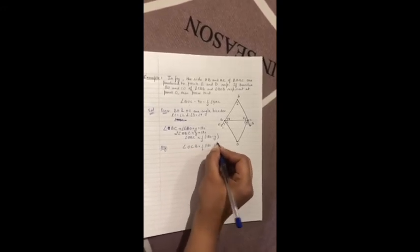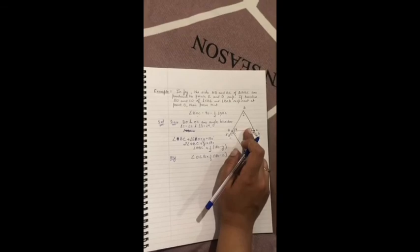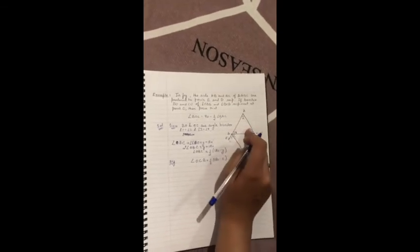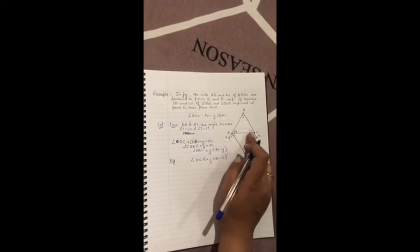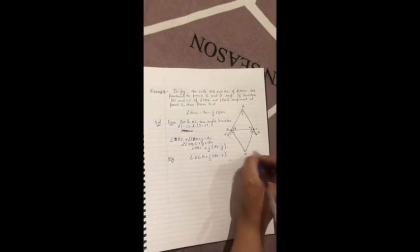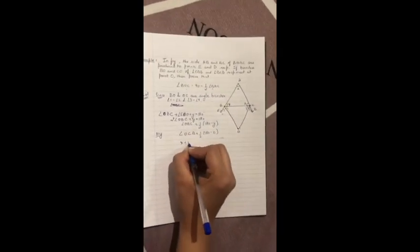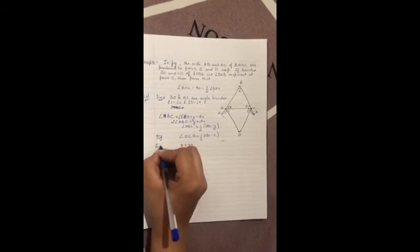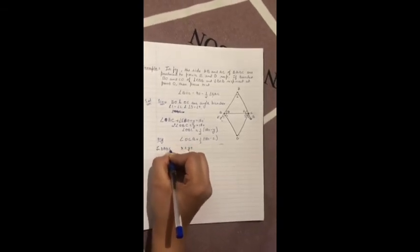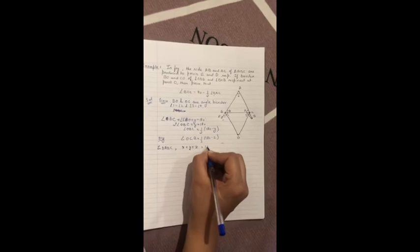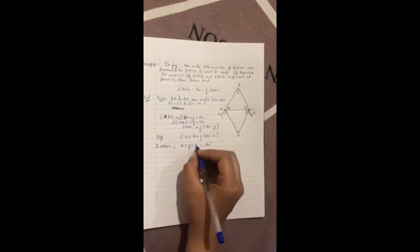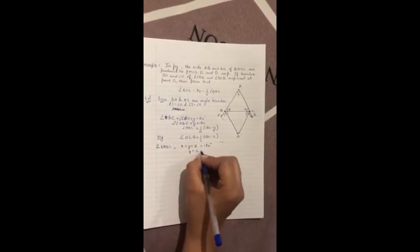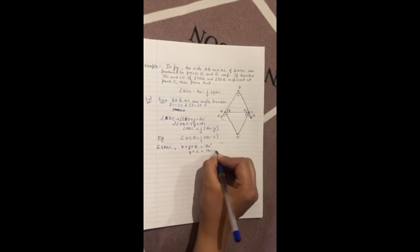Similarly, angle OCB is half of 180 minus Z. X plus Y plus Z in triangle ABC, X plus Y plus Z is equals to 180 degree. So Y plus Z is equals to 180 minus X.